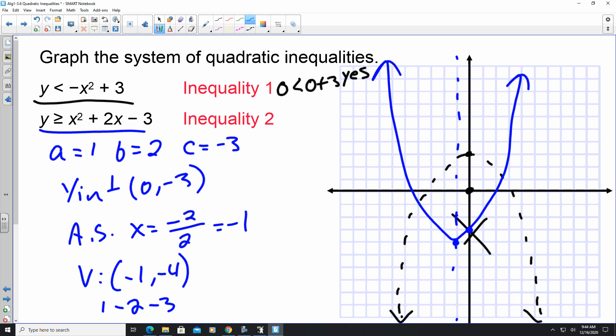Now I'm still going to use 0, 0 as my test point because it's not on the boundary line. Is 0 greater than or equal to negative 3? Is that true? The answer is yes. So that means it's the inside. My final shading is going to be what overlaps both inequality 1 and inequality 2. And that is going to be this portion right here because it holds true for both.